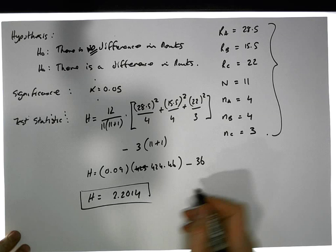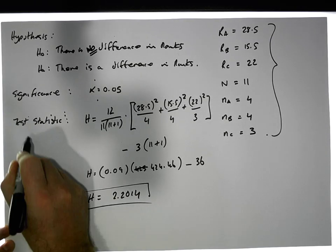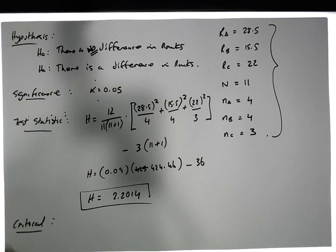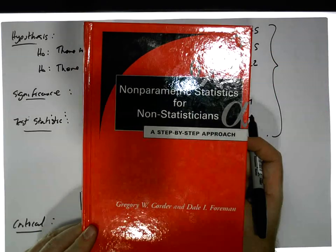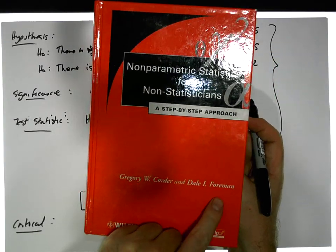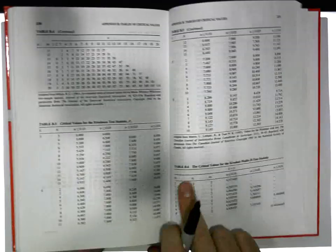Critical value tables. The tables I'm actually going to use here are taken from a text which is Non-Parametric Statistics by Corder and Foreman. The tables are down the back of that particular book.